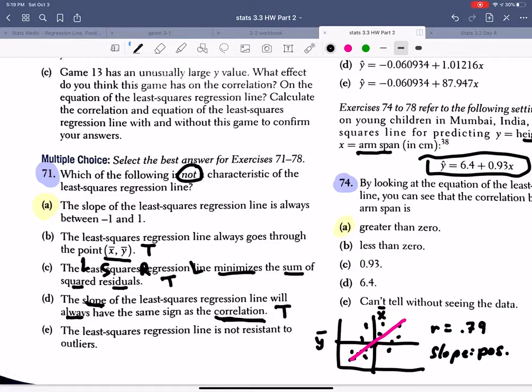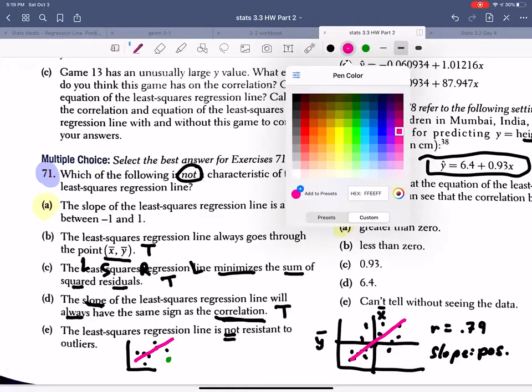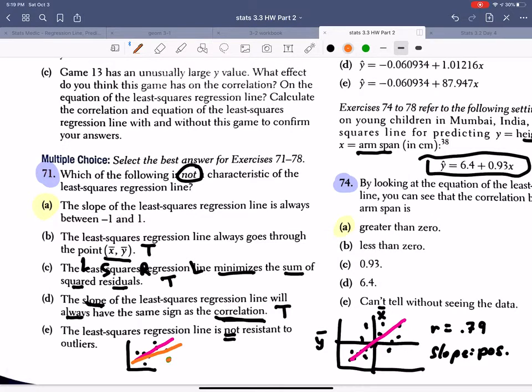Last, the least-squared regression line is not resistant. That we know is true. So if we had a least-squared regression line, and we did in our activity, and we added this green dot here, we know that the line then would be pulled down to try to meet up with this green one. So we know that this is a true statement. So this one has to be false. If we corrected it, the correlation of the least-squared regression line is always between negative one and positive one.